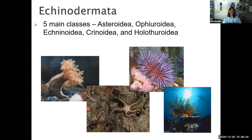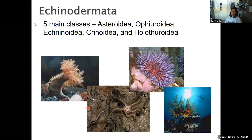In the phylum Echinodermata, there are five main classes: Asteroidea, Ophiuroidea, Echinoidea, Crinoidea, and Holothuroidea. We'll go through each one and look at their main characteristics.